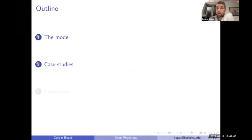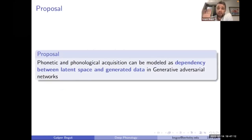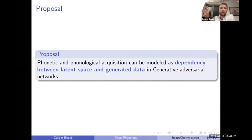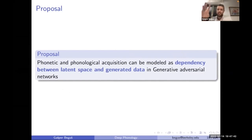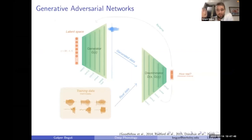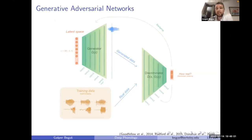A brief overview: I'll introduce the model, give some case studies, then draw conclusions. The core proposal is that phonetic and phonological composition can be modeled as the dependency between latent space and generated data in GANs. GANs are a deep learning architecture where a generator takes randomly distributed latent variables and generates data through a series of convolutional layers, and a discriminator takes real and generated data and forces the generator to produce real-like data.